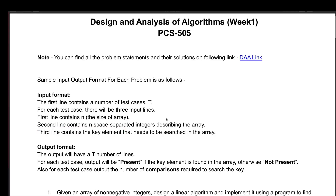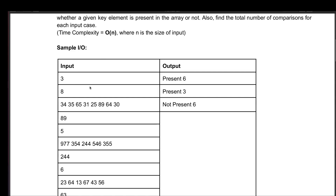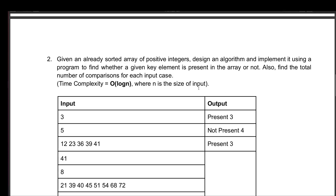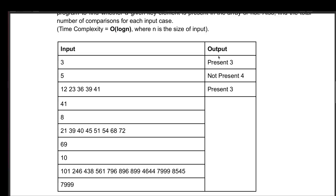The first problem statement: we have an array of non-negative integers and we need to design a linear search algorithm with O(n) time complexity. Here is the sample input and sample output for this. Similarly for the second problem — binary search — the algorithm takes O(log n) time, and for this kind of input we have this corresponding output. You can pause the video to review the input and output format.